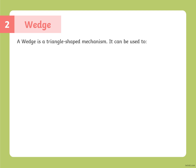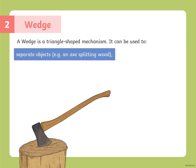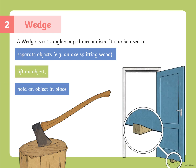The second simple machine is a wedge. A wedge is a triangle-shaped mechanism. It can be used to separate objects — for example, an axe splitting wood — to lift an object, or to hold an object in place, such as a door stopper.